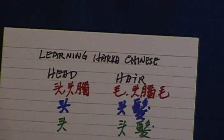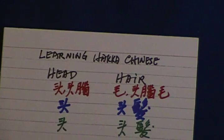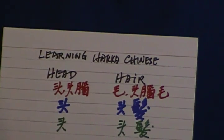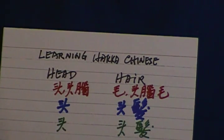Hair. Hair in Hakka Chinese is mao or teo lao mao. Mao or teo lao mao. In Mandarin is tou fa. And in Shanghai dialect is de fa.